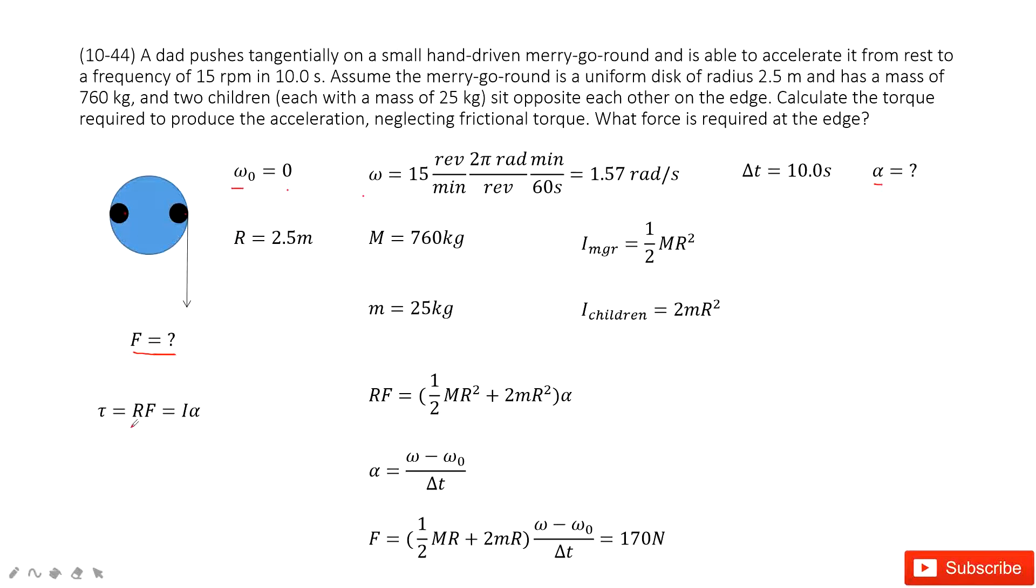See, the torque can equal r times the force. This r is given, the radius of the merry-go-round, right? Times the force. And this torque can also equal I times α.